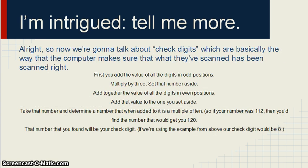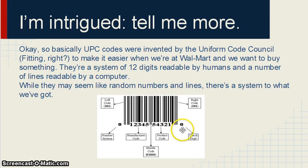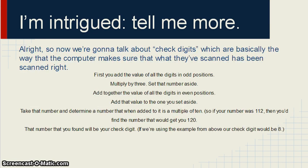So now we're going to talk about check digits, which are basically the way the computer makes sure that they've scanned the item correctly. So what is the check digit? This number right here on the end is the check digit. To find the check digit, you will take all the values of the numbers in the odd positions — so one, three, five, seven, nine, and eleven — and multiply that by three. Then you set it to the side and remember it for later.